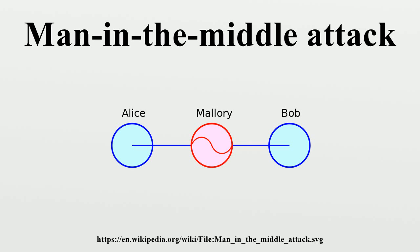Alice, believing this public key to be Bob's, encrypts her message with Mallory's key and sends the enciphered message back to Bob. Mallory again intercepts, deciphers the message using her private key, possibly alters it if she wants, and re-enciphers it using the public key Bob originally sent to Alice. When Bob receives the newly enciphered message, he believes it came from Alice.